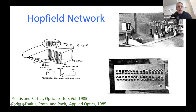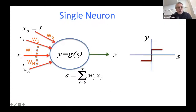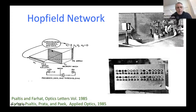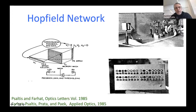Each neuron's light was detected by an array of 32 photodiodes. The weights were represented by one row of a mask, where light from an LED would be imaged onto the array. Light from each row was integrated on a single detector — performing the neuron operation — and the threshold was done electronically in the feedback loop.